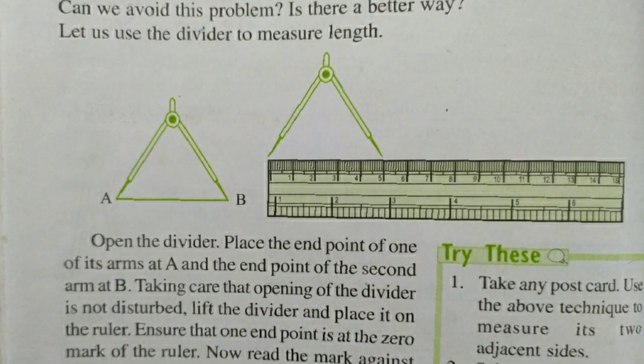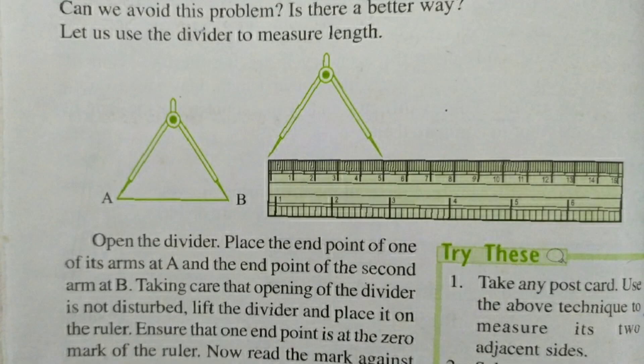So the best way to compare is with a divider. You will measure the length of the line segment using the divider by putting the divider on point A and point B, and then taking that divider onto the ruler and comparing the line segment — then you will get the accurate measurement. So this is the method for measuring the length of a line segment.